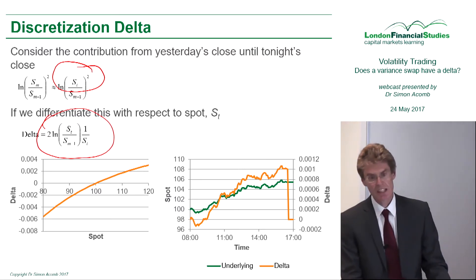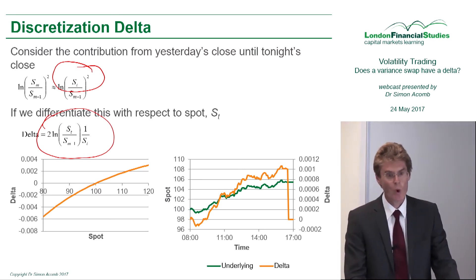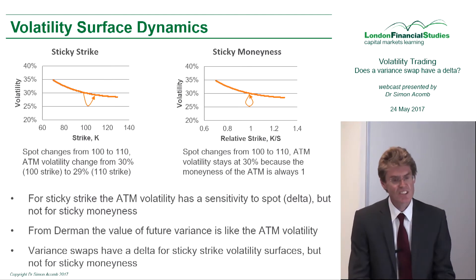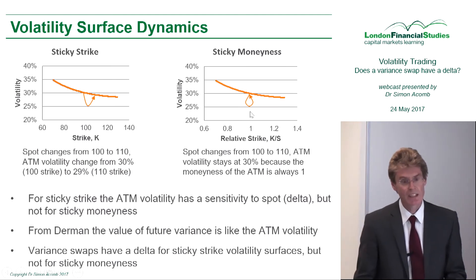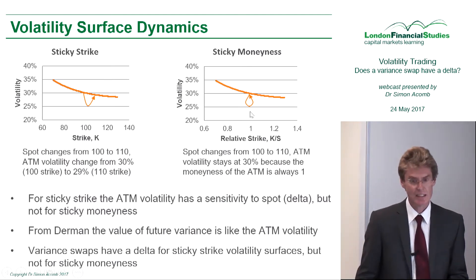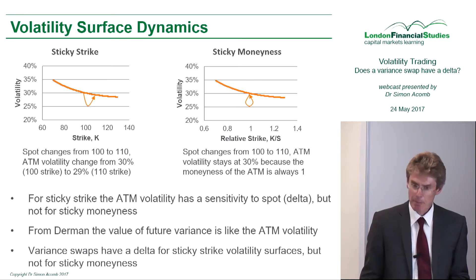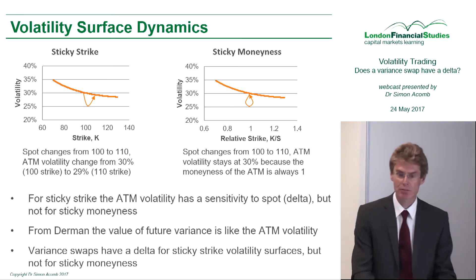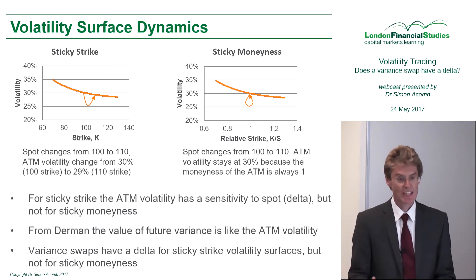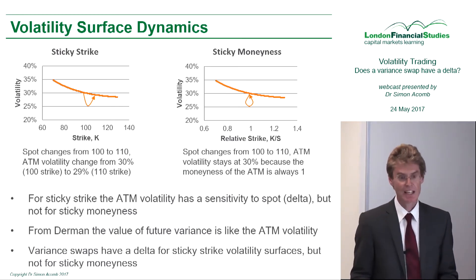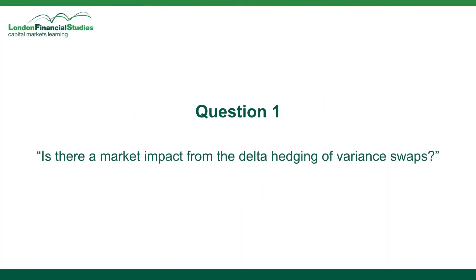In these bottom charts, I've plotted what that Delta looks like. For sticky strike, at-the-money volatility has a sensitivity to spot because it moves when spot moves. If I believe that result, the fair strike of a variance swap should behave accordingly — but is there a market impact from the Delta hedging of variance swaps?